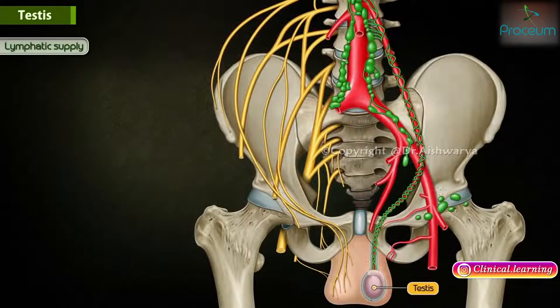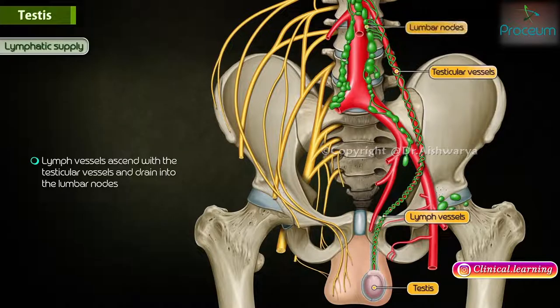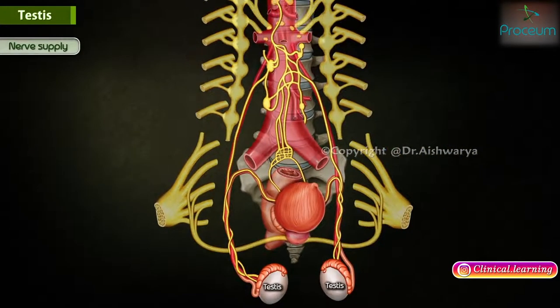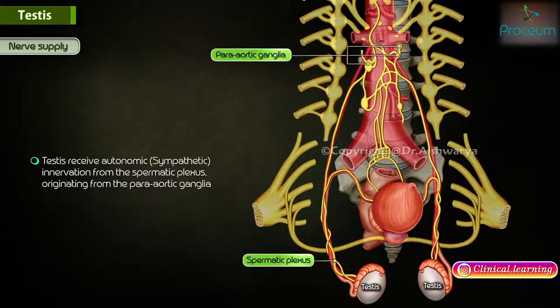Lymphatics. The lymph vessels ascend with the testicular vessels and drain into the lumbar nodes. Innervation. The testes receive autonomic or sympathetic innervation from the spermatic plexus originating from the para-aortic ganglia.